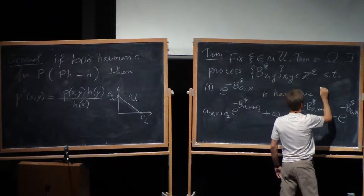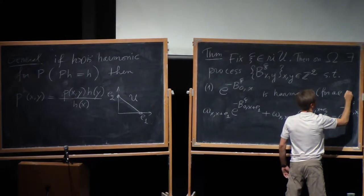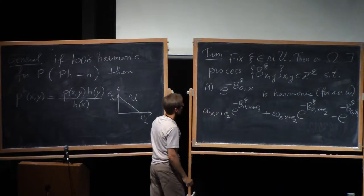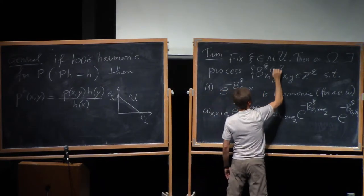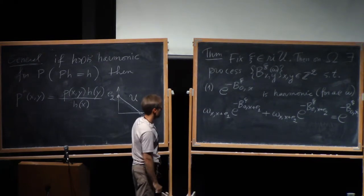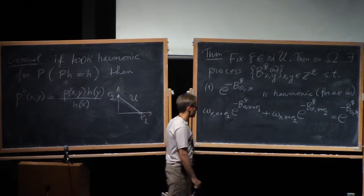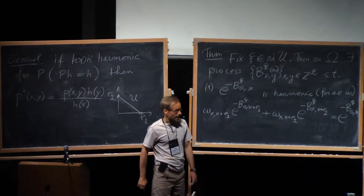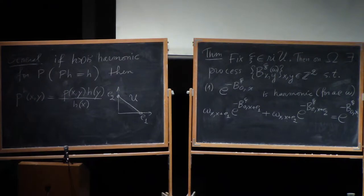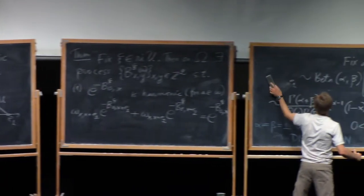So transition from x to x plus e1 times the function plus the other transition equals the function at the starting place. So it's harmonic. Omega is all the time present here. So this is for almost every omega. Everything is for almost every omega, right? So there's a hidden omega here. This is a process. So it's a function of omega. I'm just not writing it there. So there's a global harmonic function like this. And it's coming from certain limits. So this is the second part of that theorem.